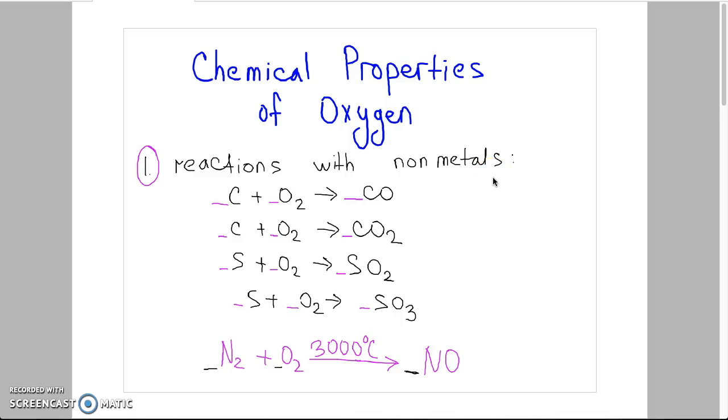In this video we will discuss chemical properties of oxygen. First property is reaction with non-metals. Depending on the kind of non-metal and the amount of oxygen, different types of oxides may be formed.